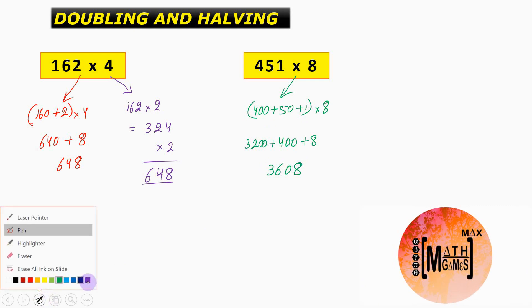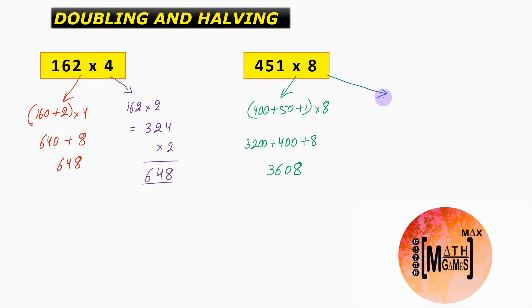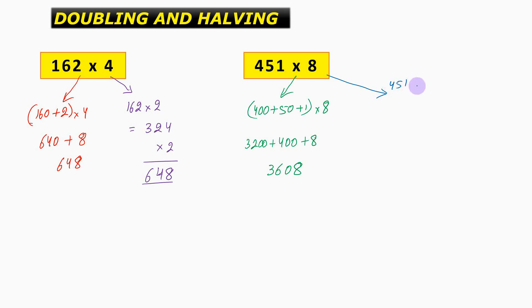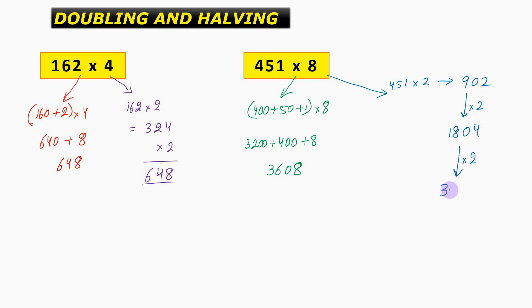There is an alternative method. Multiplying by 8 is another way of saying multiplying by 2 three times — repeating the process of multiplying by 2 three times. So we multiply 451 by 2, giving us 902. Then again we multiply this quantity by 2, giving us 1804. And again we multiply this quantity by 2, giving us the answer as 3608.